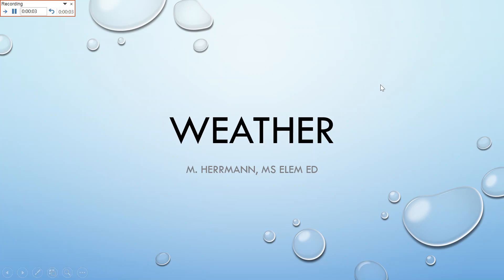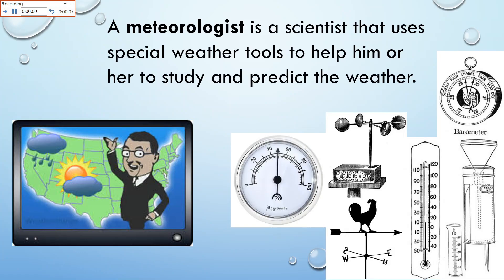All right, today's review is on weather, whether you want to or not. A meteorologist is a scientist that uses special tools to help him or her to study and predict the weather. Here we have our cute little meteorologist guy giving his weather report, and these are some of the tools that he could have used.